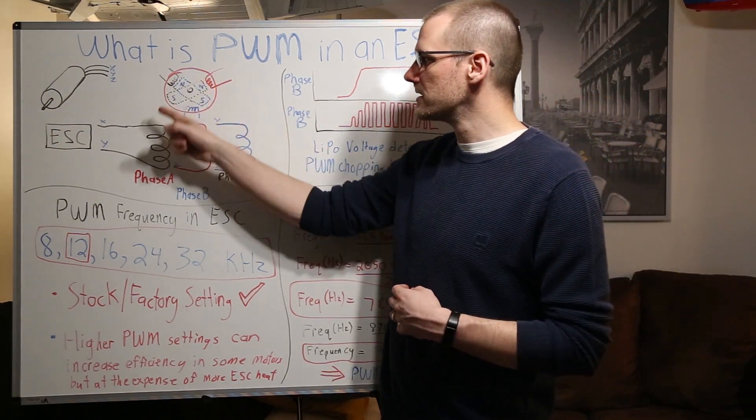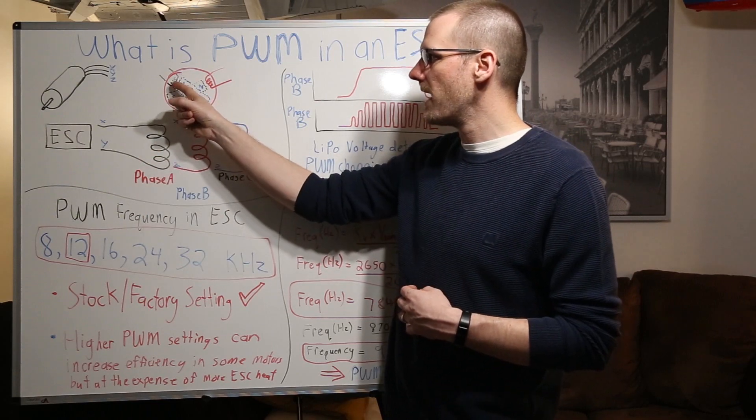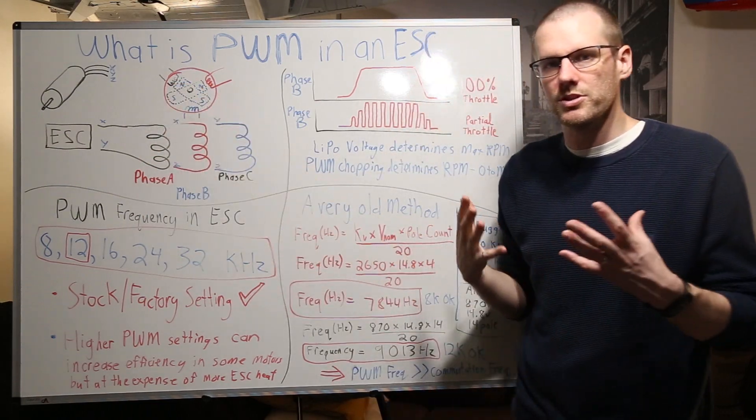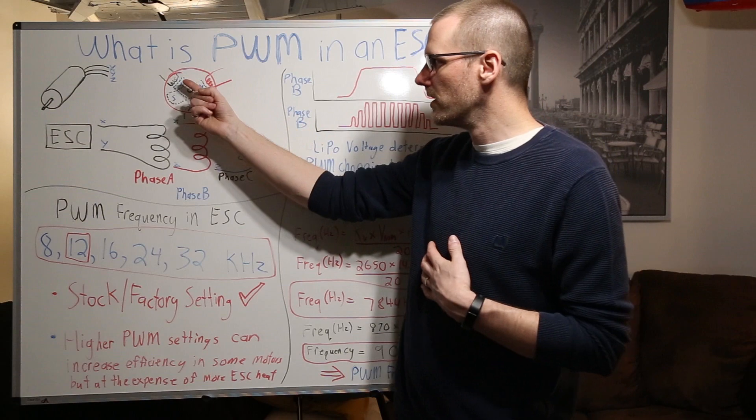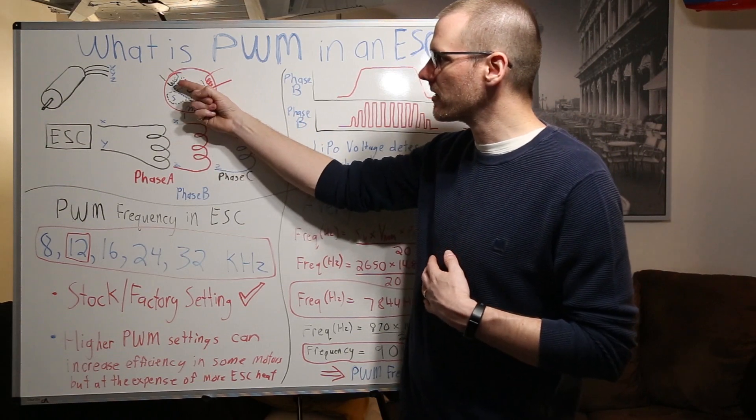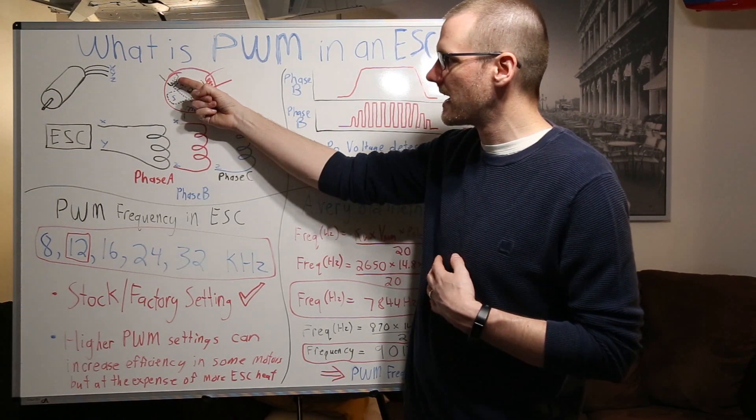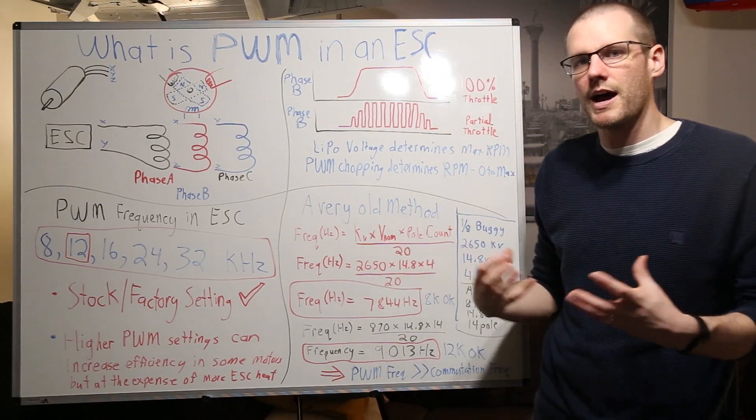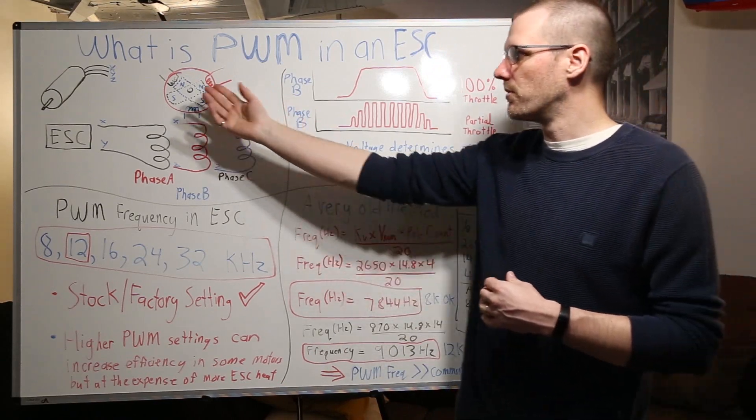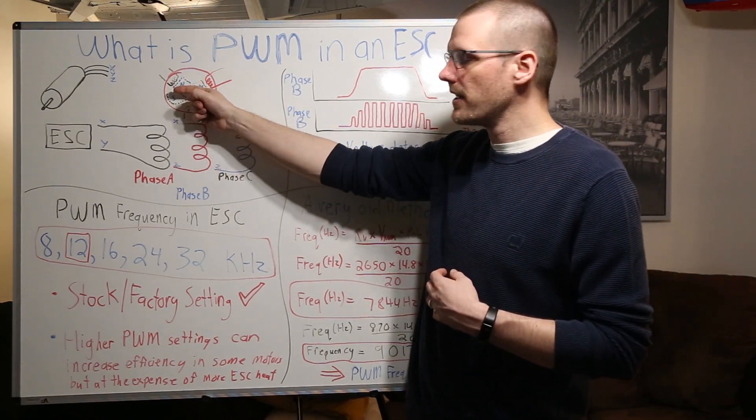And what's important here is as this phase A is going to be powered, we want to make sure that we are able to turn it into a north pole to repel this. So let's say it's going counterclockwise. It's already moving and past that halfway point. We want to fire that phase and create that north pole so that we can push and repel that magnet away.